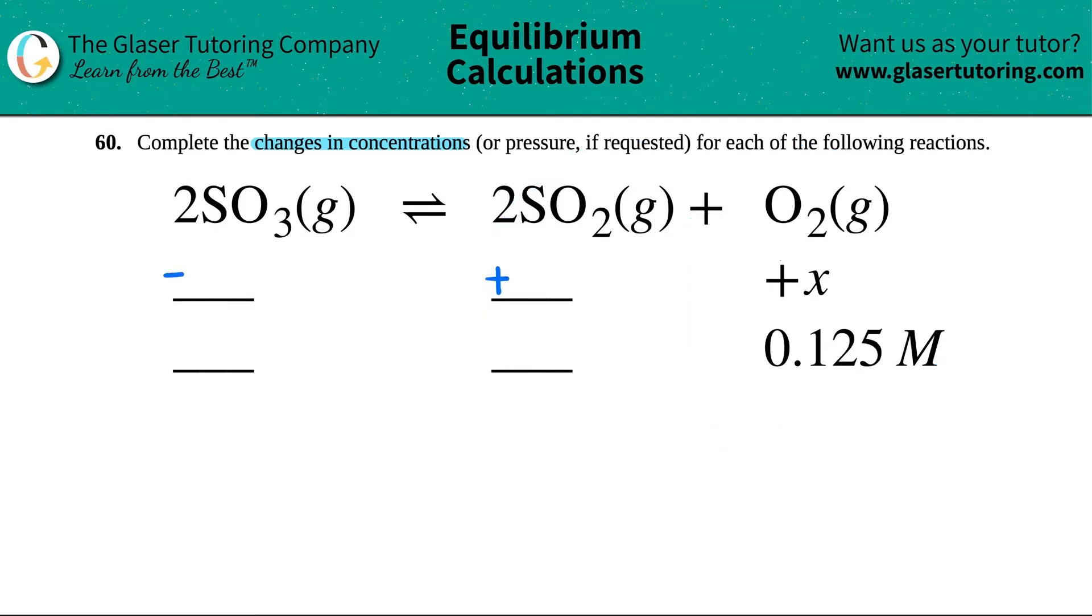So I know right now that the SO2 has to be a plus and the SO3 has to be going down by some amount. Now let's figure out what that is. We're going to be looking at the coefficients. There's a 2 in front of the SO3. There's a 2 in front of the SO2. And there was a 1, right, in front of the O2. There was no number, but remember that means 1.